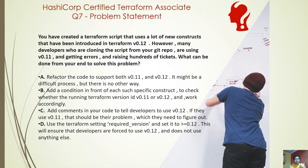Option B: add a condition in front of each specific construct to check whether the running Terraform version is 0.11 or 0.12 and work accordingly. This is basically doing something like an if-else — if the running Terraform version is 0.11, create the resource one way, else create it another way. Again, this is code refactoring and is not needed. Actually, I personally believe this is not even possible — you cannot do that kind of thing in Terraform right now. So this is not an option at all.